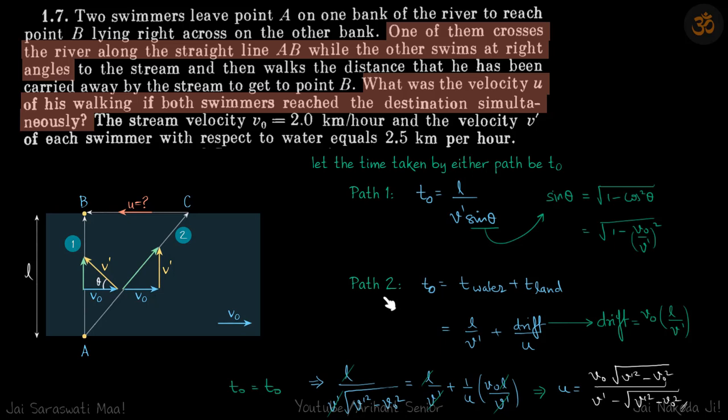For path 2, we have to calculate time for this and this. So for AC, T water plus T land. In water the time taken is L by V dash because its velocity towards L is V dash and time taken on land is drift divided by U.